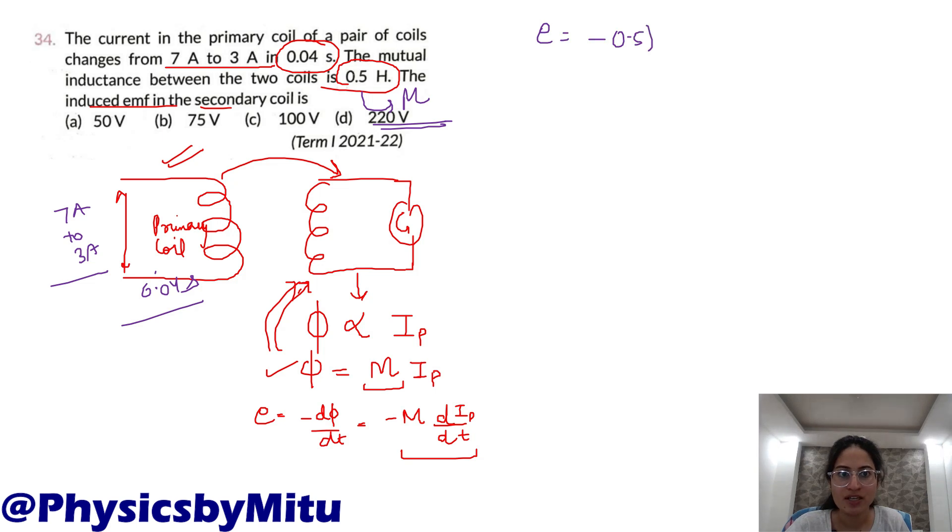E equals minus 0.5 times dI/dt. What is the change in current? 3 minus 7, final minus initial. Time is 0.04 seconds. Solve this: minus 0.5 times minus 4 times 100 upon 4, which is 50 volts. This is your answer.